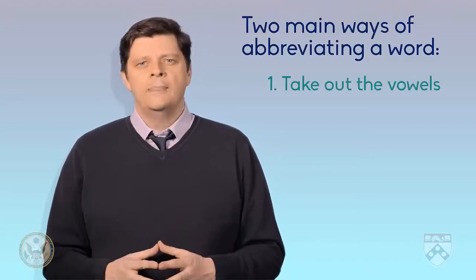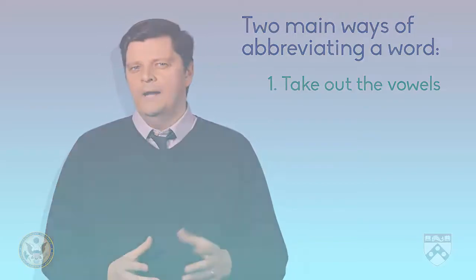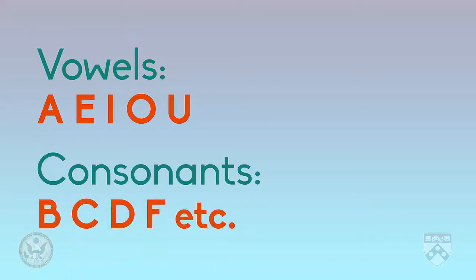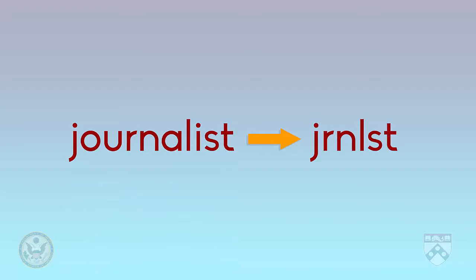There are two main ways of abbreviating a word. The first is to take out the vowels, by which we mean A, E, I, O, U, and leaving in the consonants, B, C, D, F, etc. So, for example, the word journalist is written J, R, N, L, S, T, because the O, the U, the A, and the I are not written down.